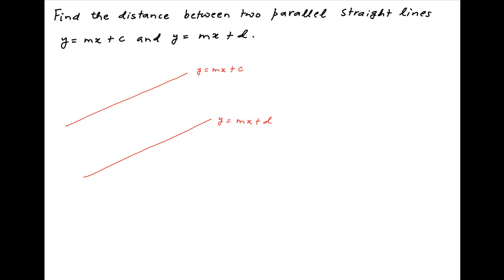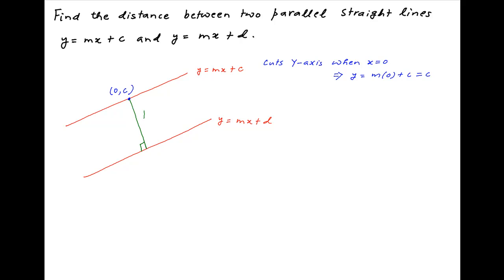The first line, y is equal to mx plus c, cuts the y-axis when x is equal to 0. At this point, the value of y is equal to m times 0 plus c, which is equal to c. Therefore, the line y is equal to mx plus c cuts the y-axis at a point with coordinates (0, c).